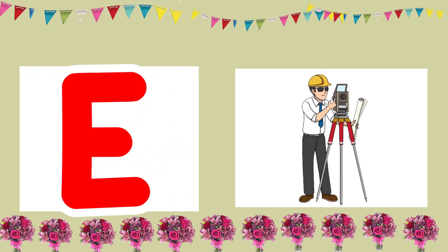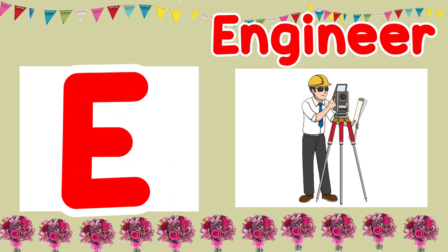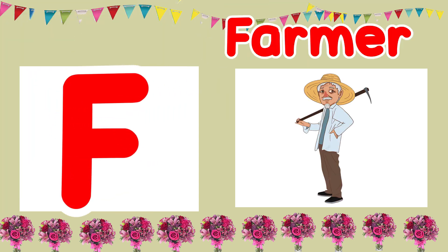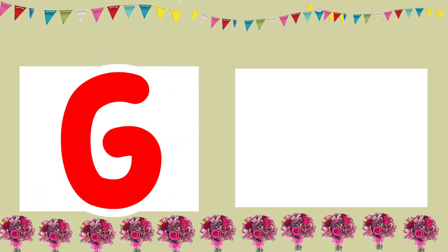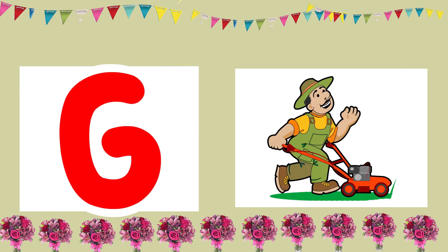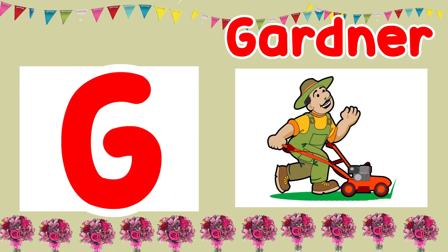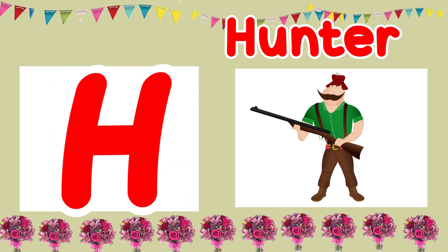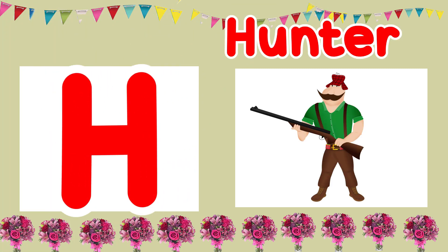E is for Engineer. E, E, Engineer. F is for Farmer. F, F, Farmer. G is for Gardener. G, G, Gardener. H is for Hunter. H, H, Hunter.